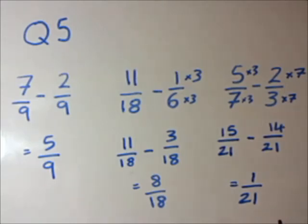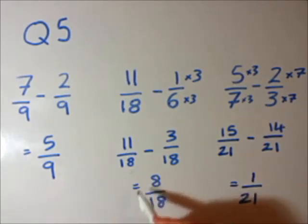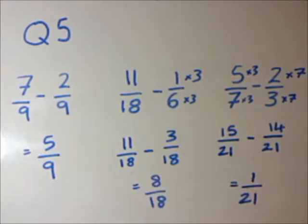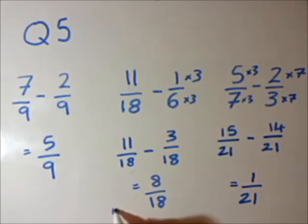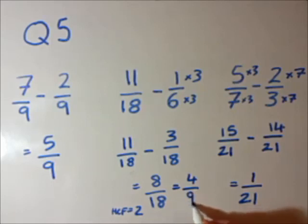Just before we go on, I realised in the second example we're right, but we haven't simplified to its most simple form like in question 3. We've got 8 over 18. We need to reduce this down to its simplest form by finding its highest common factor. 2 goes into 8 and 2 goes into 18, so the highest common factor is 2. Dividing top and bottom: 8 divided by 2 is 4, 18 divided by 2 is 9. So here's our correct answer: 4 over 9.